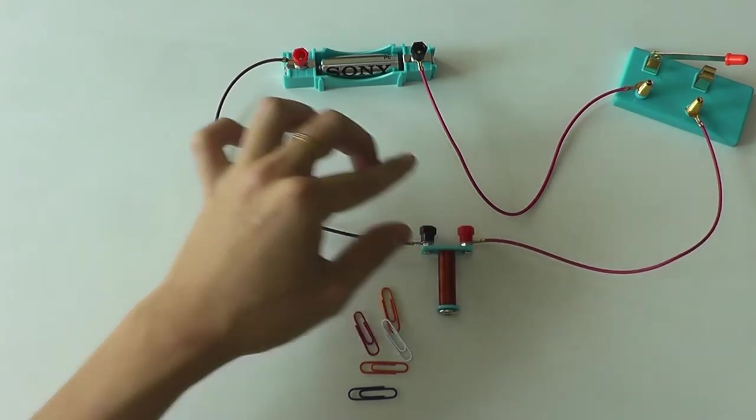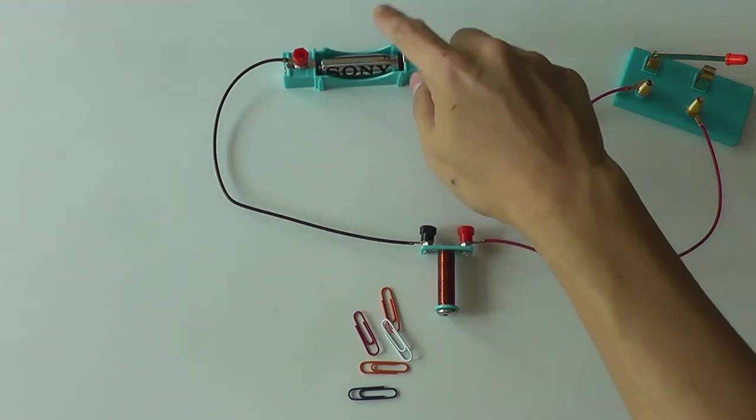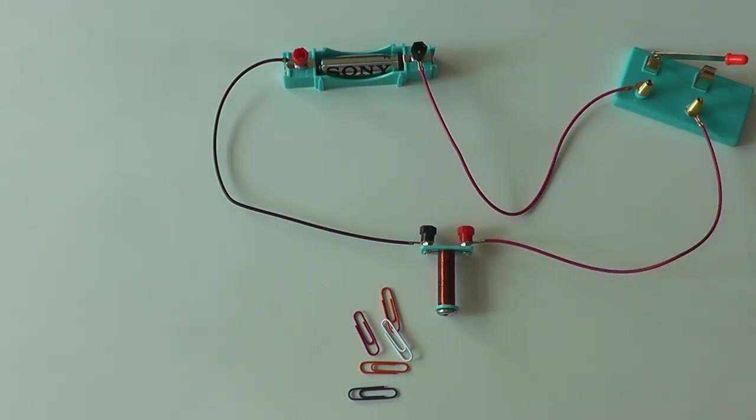So maybe you can try to form a stronger electromagnet by adding another battery to it. You'll find that you can attract more paper clips.